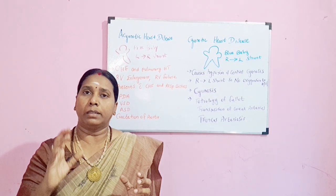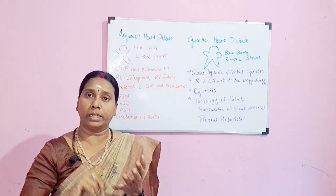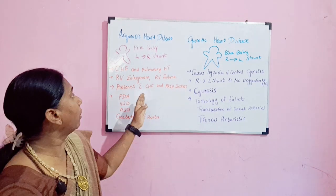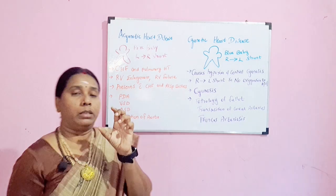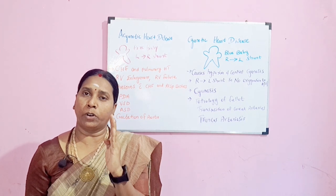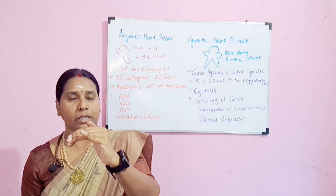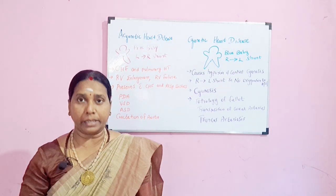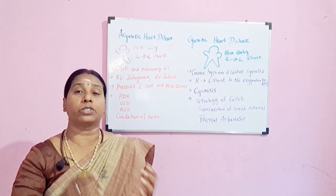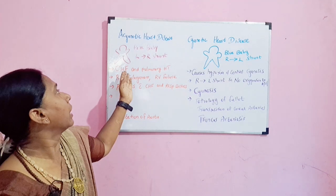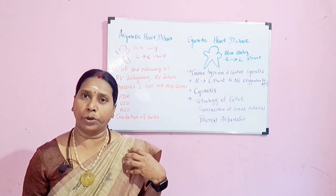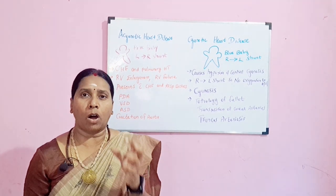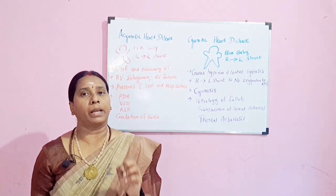The baby will have respiratory distress and breathing difficulty. Because the oxygenated blood is going back to the lungs for purification instead of circulation, there is congestive heart failure. And because so much blood is going into the lungs, there will also be pulmonary hypertension.